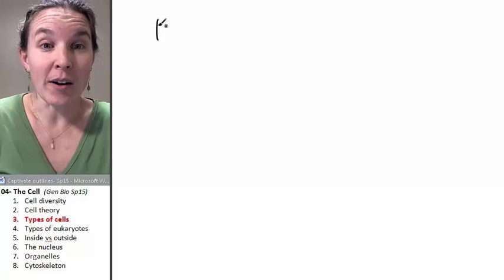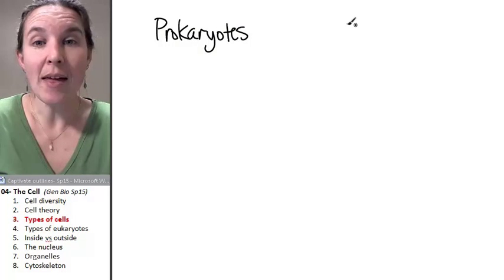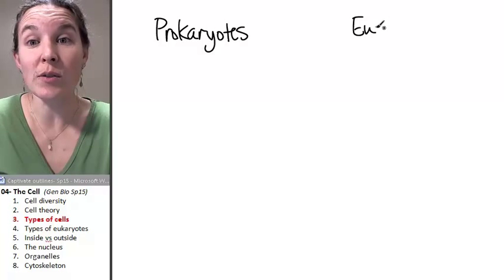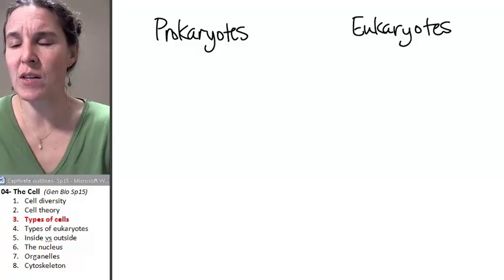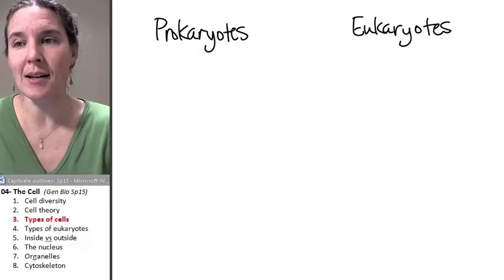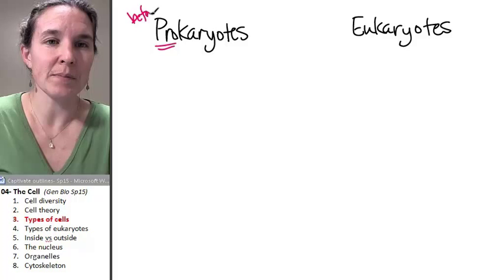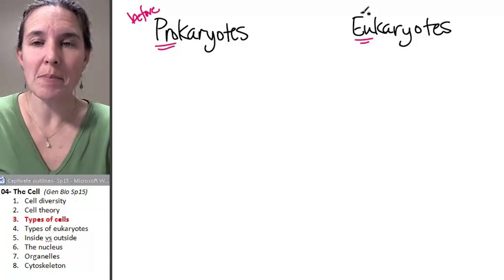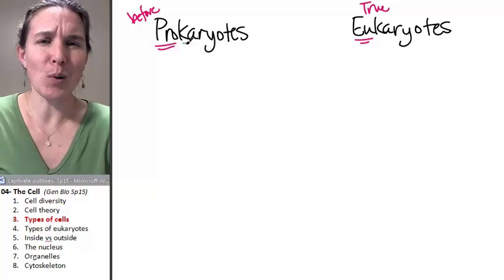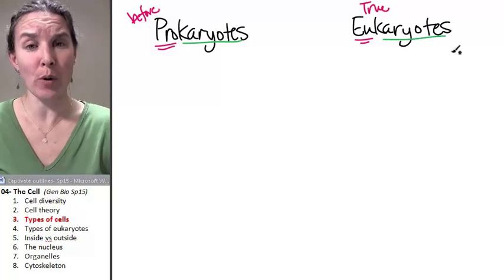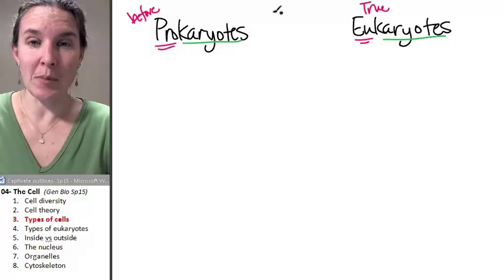There are prokaryotes and there are eukaryotes. And let's just do a quick dissection of these words. What exactly do these words mean? Pro means before, and eu means true. And this whole karyote thing, which is similar in both of them, actually is referring, or the word itself actually means kernel.